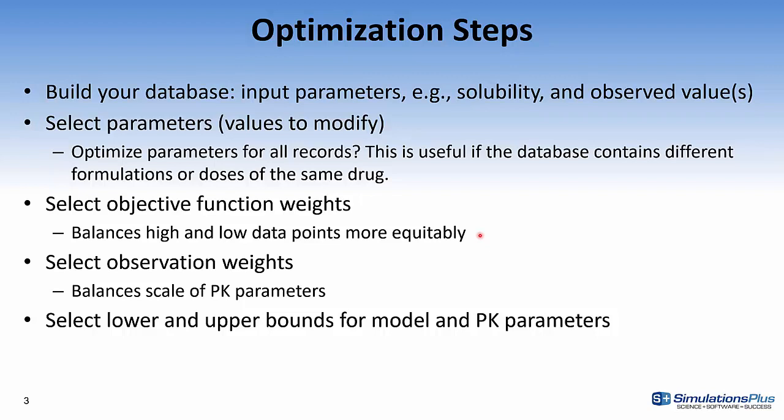The next thing to select is your observation weights. Different observations can be weighted differently. For example, you could weight the oral bioavailability differently than the Cmax. And then the final step is to select lower and upper bounds for the parameters that will be optimized and also the PK parameters.